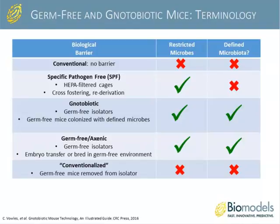The next level is notobiotic. Notobiotic mice are not germ-free—they are germ-free mice that have been colonized with defined microbes and live within germ-free isolators, ensuring only the bacteria you introduced are present, giving them a defined microbiota. The next level is germ-free, or axenic—the true germ-free mice that live in isolators with no microbiota whatsoever. Finally, conventionalized mice are germ-free mice removed from the isolator with no restricted microbes or defined microflora.